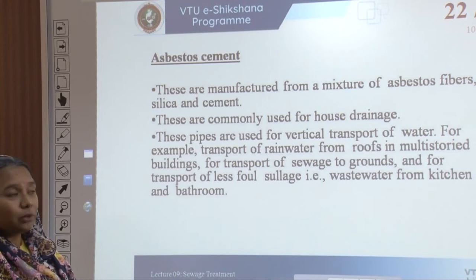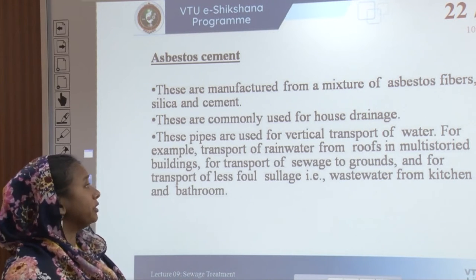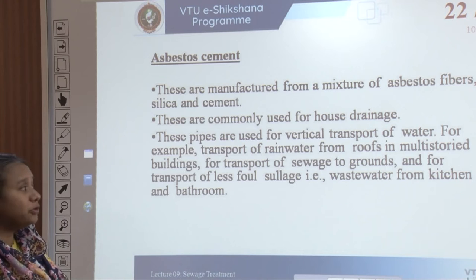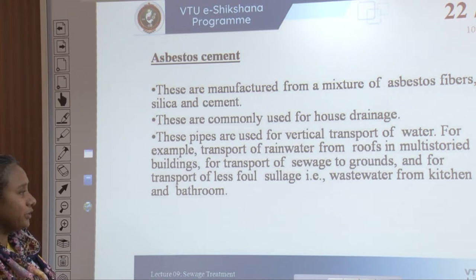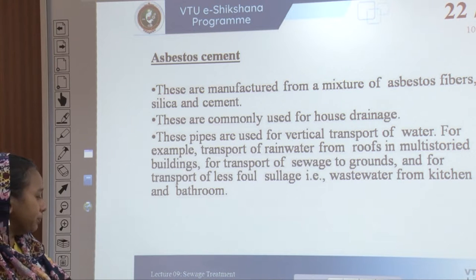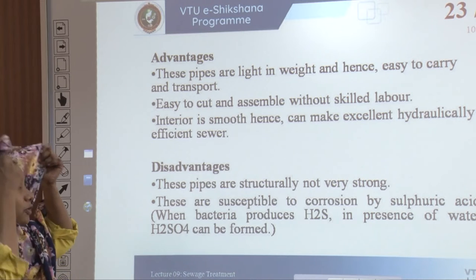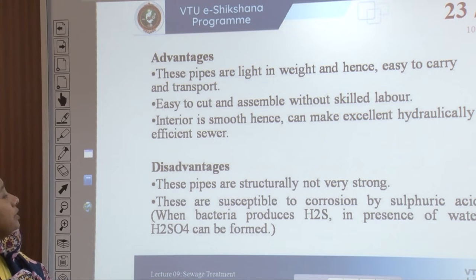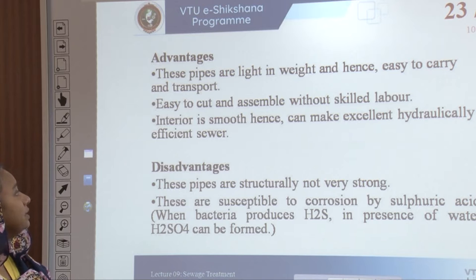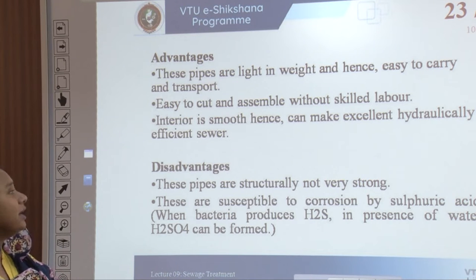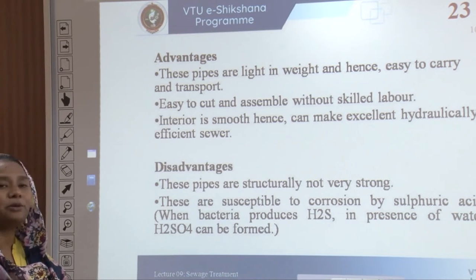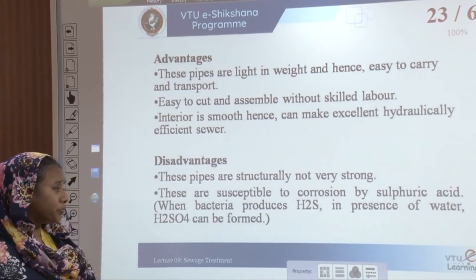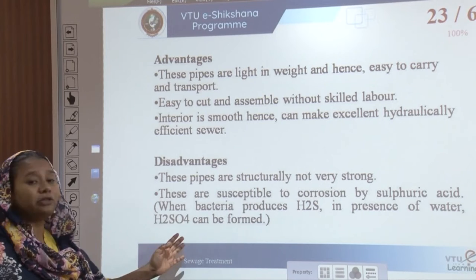Advantages of asbestos cement pipelines: they are light in weight, easy to carry and transport, easy to cut and assemble without skilled labor, and the smooth interior makes them hydraulically efficient. Disadvantages: these pipes are not structurally strong and are susceptible to corrosion by sulfuric acid — when bacteria produce H₂S in the presence of water, H₂SO₄ is formed.